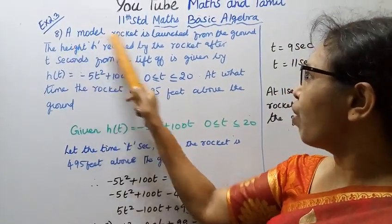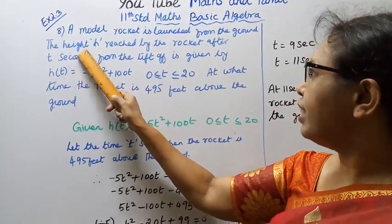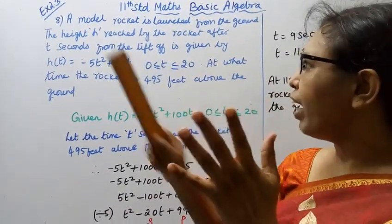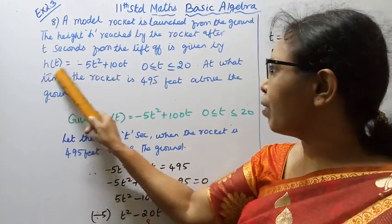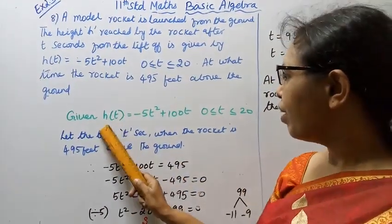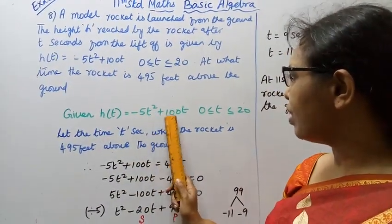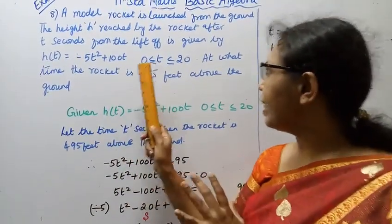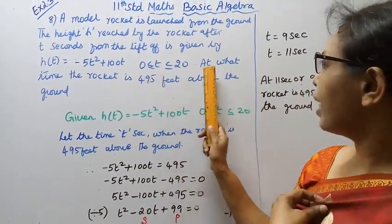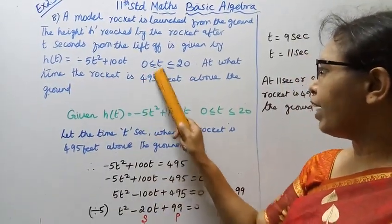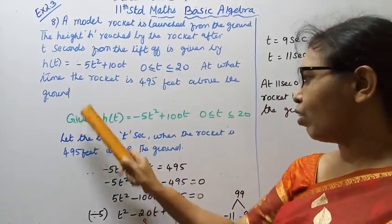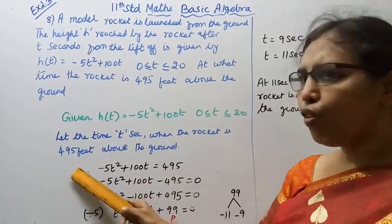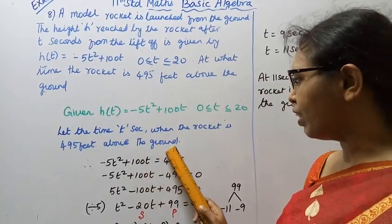Given h(t), the height reached by the rocket after t seconds from the liftoff. The equation is h(t) = -5t² + 100t. We need to find at what time the rocket is 495 feet above the ground - that is, the time t in seconds when the rocket is 495 feet above the ground.